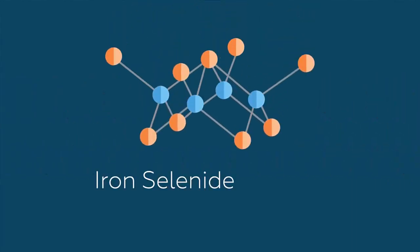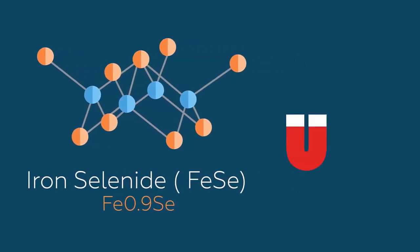One such compound is iron selenide, FeSe. It forms close to Fe0.9Se. This non-stoichiometry gives rise to magnetic properties. Iron selenide is a low-temperature superconductor.